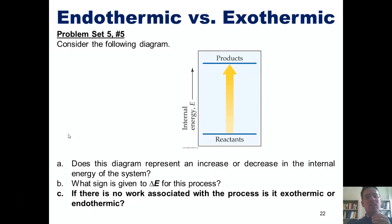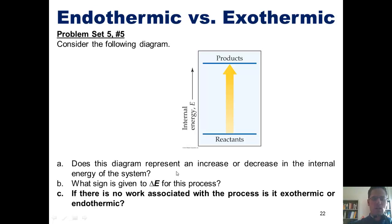And then answer these questions. Does this diagram represent an increase or decrease in the internal energy of the system? As we look at it, we can see that going from reactants to products, the products are at a higher energy level than the reactants. Thus, the internal energy, as indicated here on the y-axis, has increased.